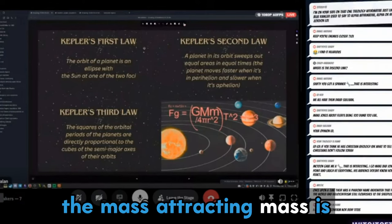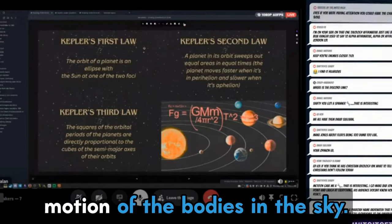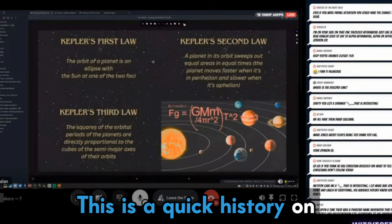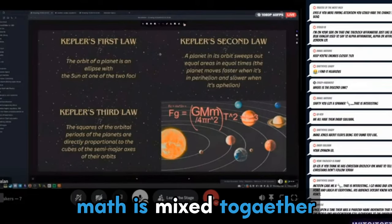They've told everyone that mass attracting mass is the causal mechanism for the motion of the bodies in the sky. So this is a quick history on that and how the math is mixed together.